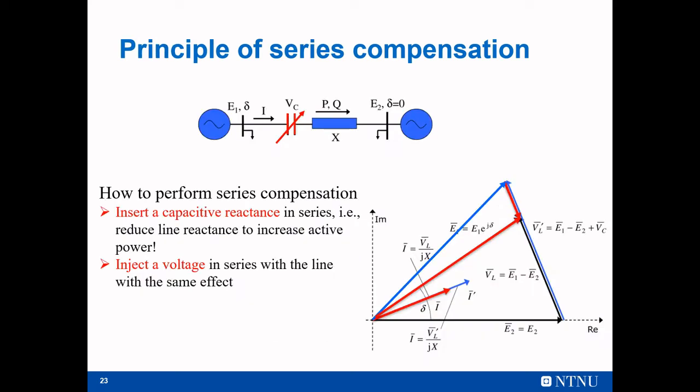Now we can start with the series compensation devices. The main principle is to shorten the line. For example, here we added something. We can inject voltage or introduce a capacitor that shortens the lines. So two ways: increase a series capacitor there or inject a voltage source there.